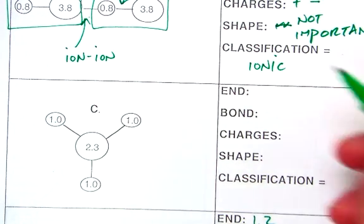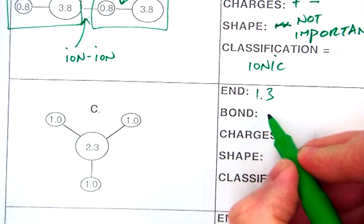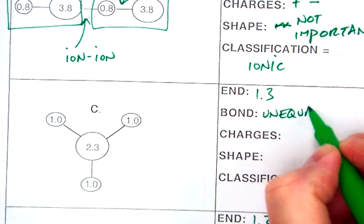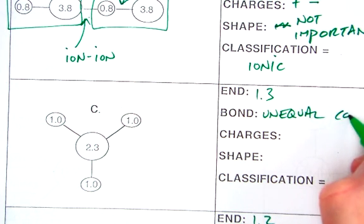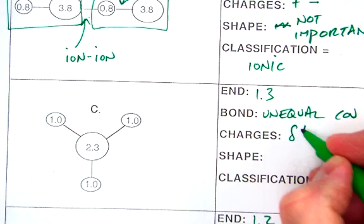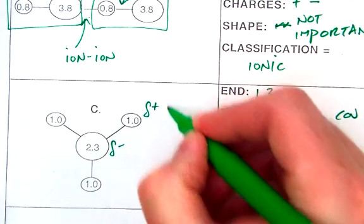All right, our electronegativity difference would be 1.3. You'd have unequal covalent bonds, same way as from A and D. Partial charges are going to be assigned, partial negative in the center, positives on the outside.